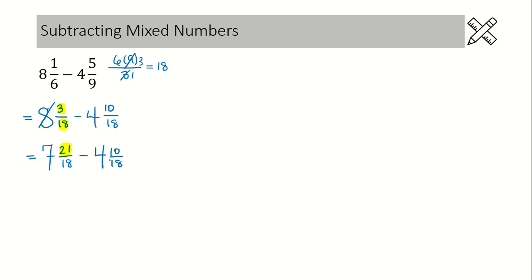Now we can subtract everything. We start with our whole numbers first: 7 minus 4 is 3. Remember, we don't subtract the denominator, so we write that in. Then we subtract the numerators, because we have a larger numerator in front: 21 minus 10 is 11.